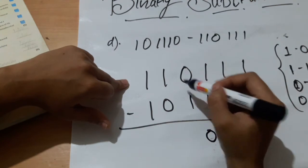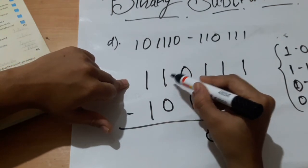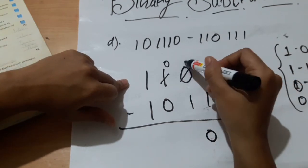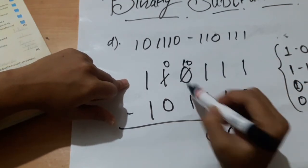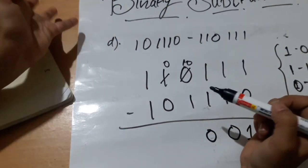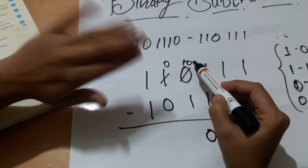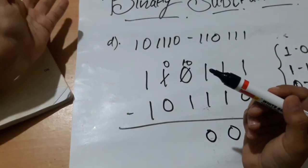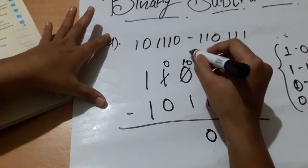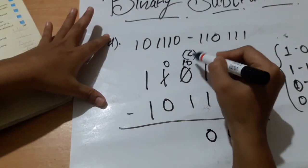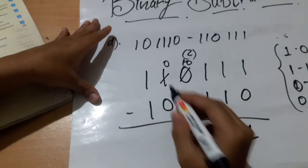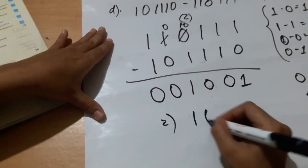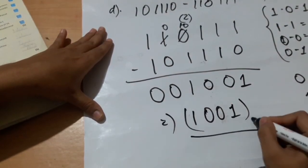We need to borrow 1 from the next digit. That digit gives its 1, becoming 0, and this position becomes 10 in binary. Since 10 in binary equals 2 in decimal, 2 minus 1 is 1. Continuing: 0 and 0. So our final answer is 1001 to the base 2.